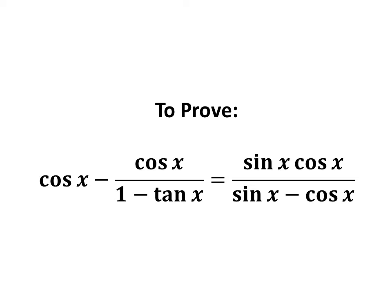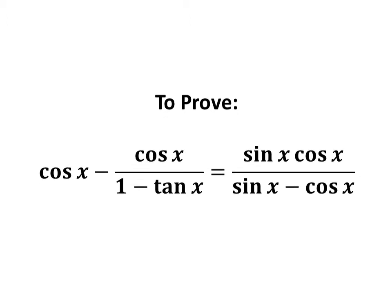In this video, we will learn to prove the trigonometry identity: cosine of x minus cosine of x upon 1 minus tangent of x, is equal to sine of x times cosine of x upon sine of x minus cosine of x.